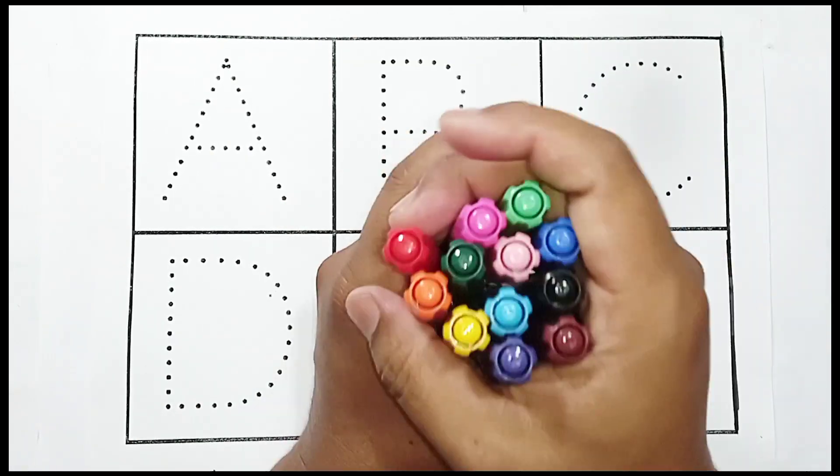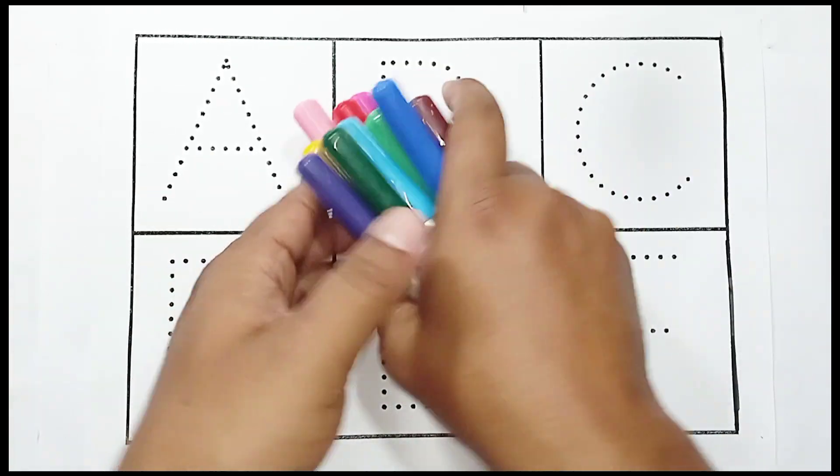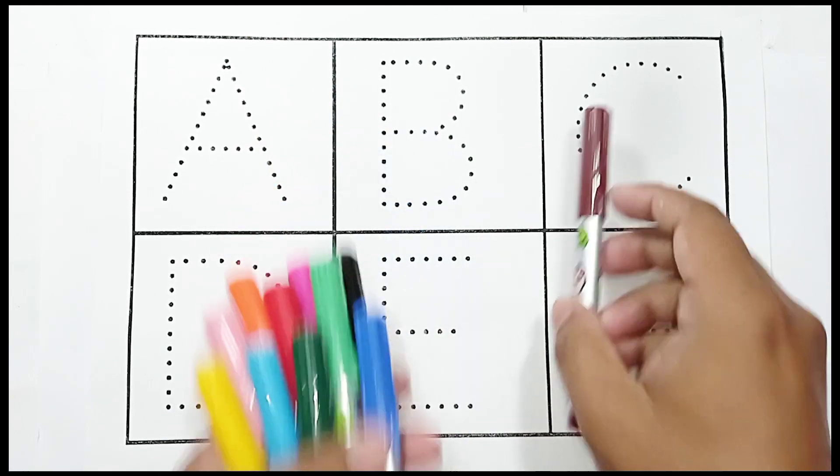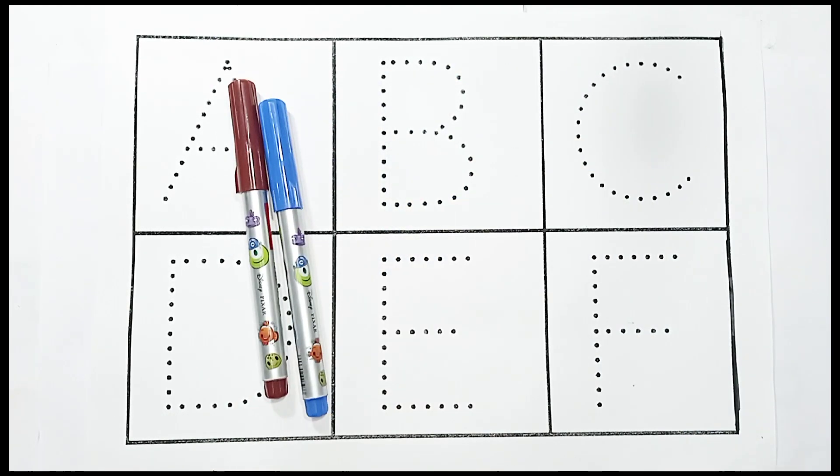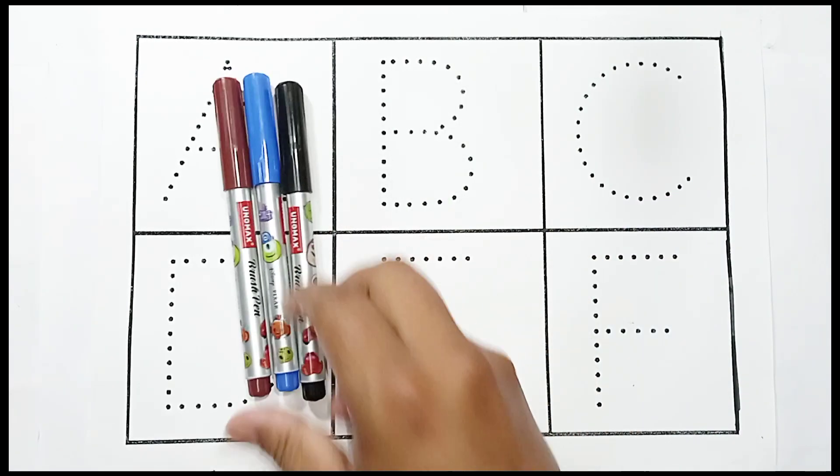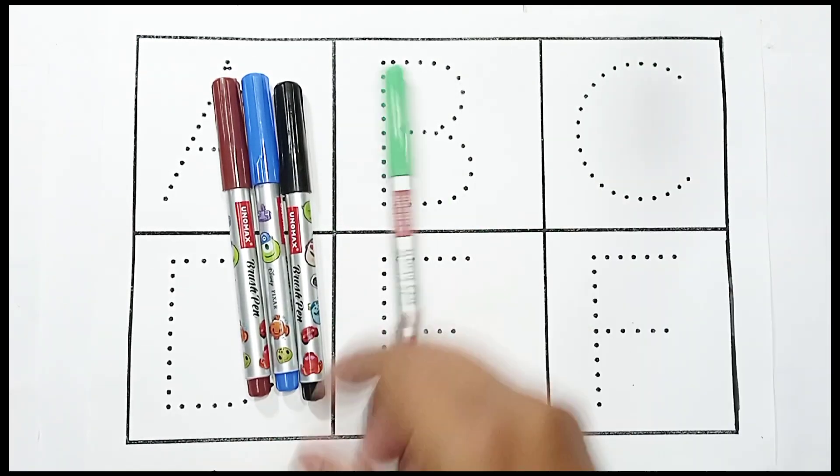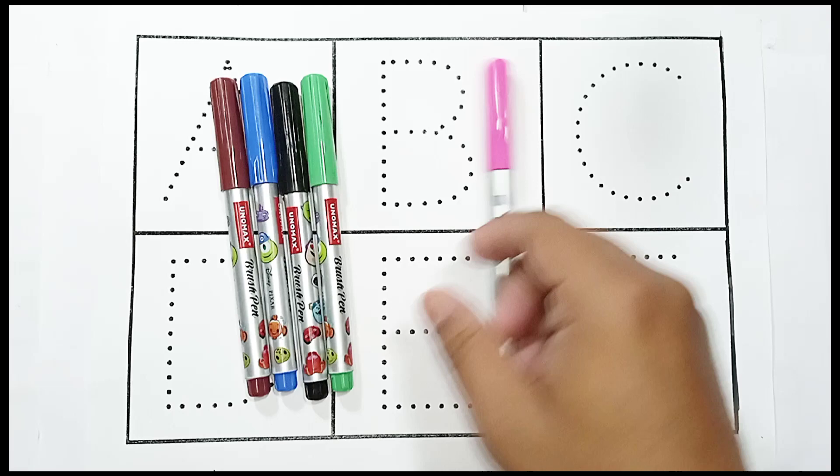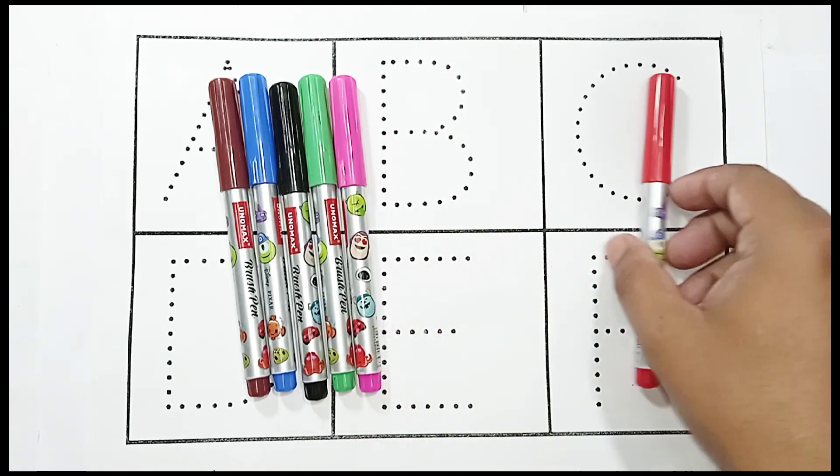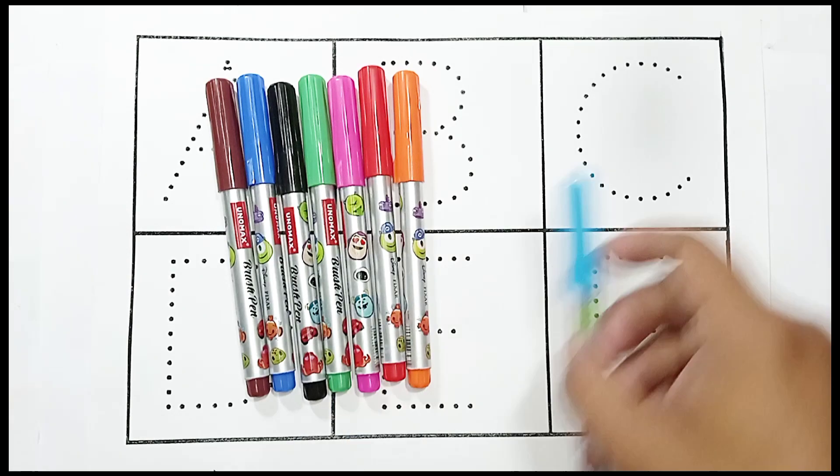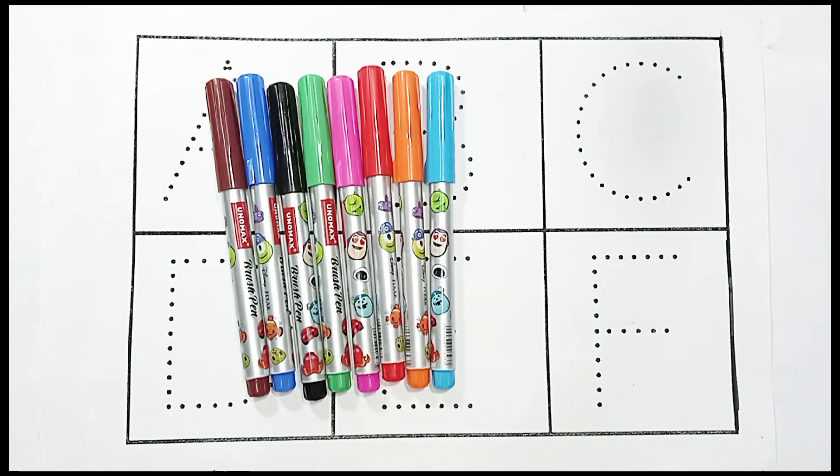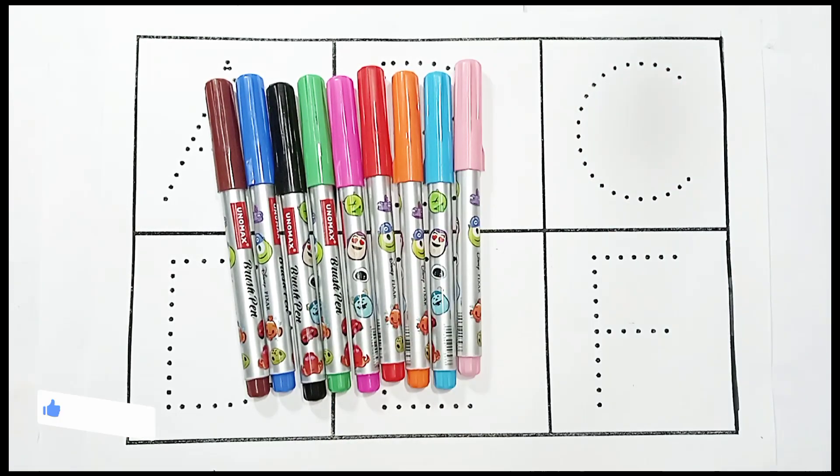Hello kids, let's learn colors. Brown color, blue color, black color, light green color, pink color, red color, orange color, light blue color, light pink color.